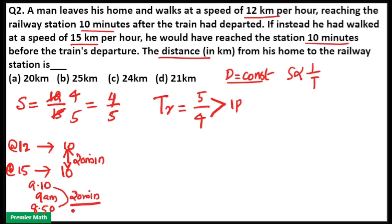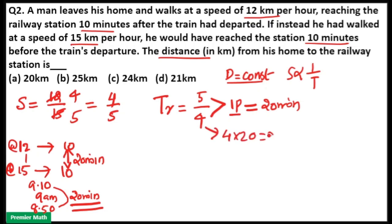The actual time difference between both speeds is 20 minutes. In the ratio, the time difference is 1 part, so 1 part equals 20 minutes. Therefore, 4 parts equal 4 × 20 = 80 minutes, and 5 parts equal 5 × 20 = 100 minutes.